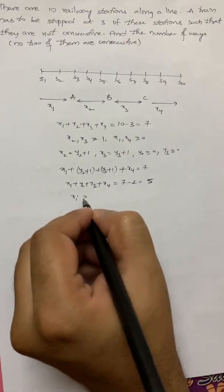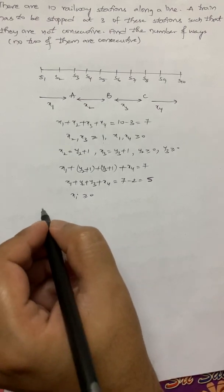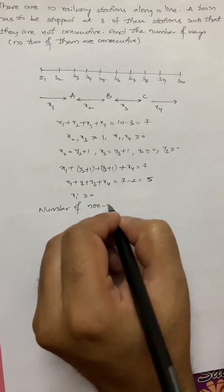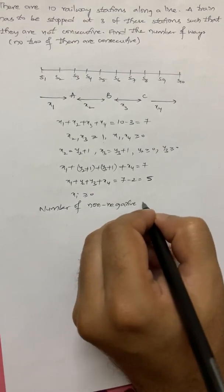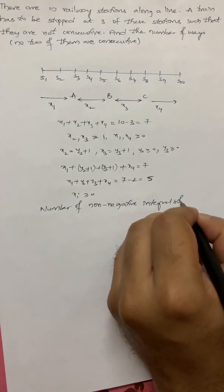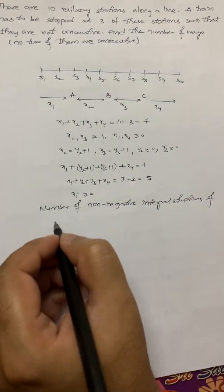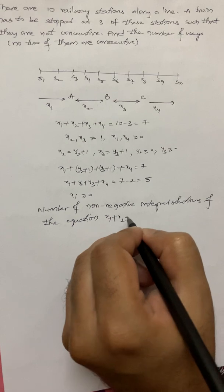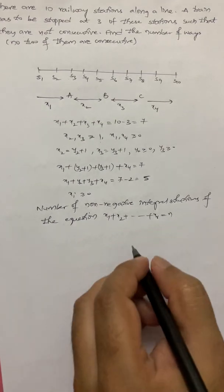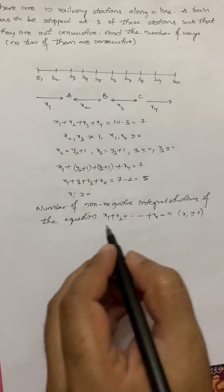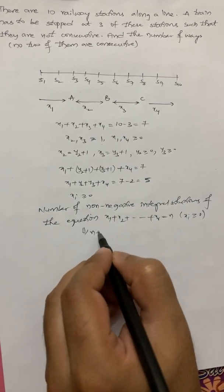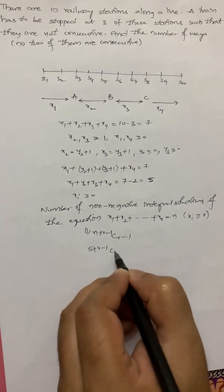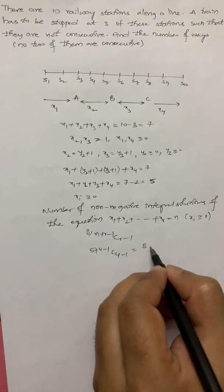Here all of them, xi is greater than or equal to 0. This is nothing but number of non-negative integral solutions of the equation. Non-negative integral solutions of the equation x1 plus x2 so on to xr is equal to n. Here xi is greater than or equal to 0. The number of solutions are n plus r minus 1, c r minus 1. If I use the same thing here, 5 plus 4 minus 1, c 4 minus 1. So it is 8 c 3.